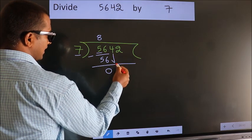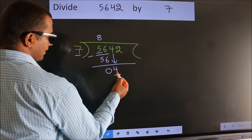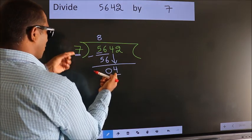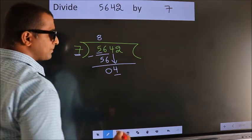After this, bring down the beside number. So 4 down. Here we have 4. Here 7. 4 smaller than 7.